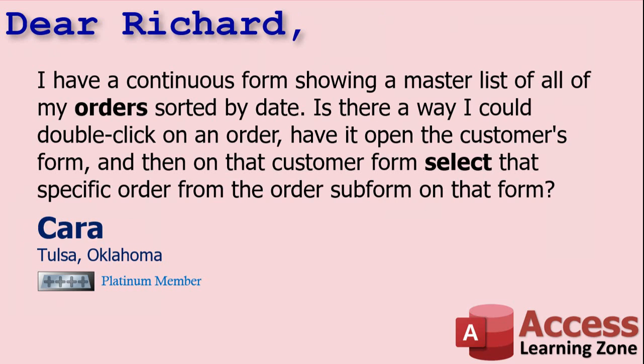Today's question comes from Kara in Tulsa, Oklahoma, one of my Platinum members. Kara says: I have a continuous form showing a master list of all of my orders sorted by date. Is there a way I could double-click on an order, have it open up the customer's form, and then on that customer form, select that specific order from the order subform on that form?